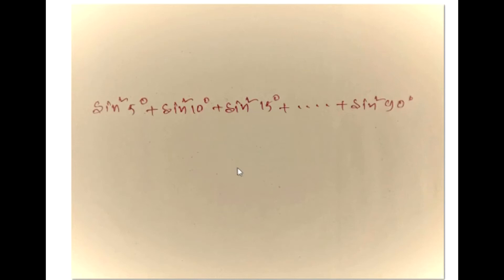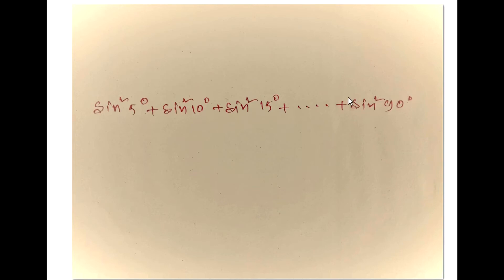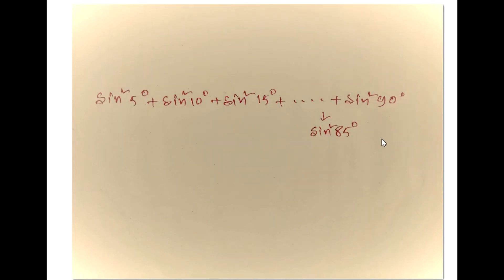Now here is another example and this is a complicated one. We have sin square 5 degree plus sin square 10 degree plus sin square 15 degree plus dot dot plus sin square 90 degree. Now here 5 degree plus 90 degree is not 90 degree, so we can't apply this rule. But the last term before sin square 90 degree is sin square 85 degree, and 5 degree plus 85 degree is 90 degree.